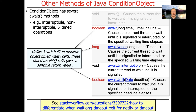Unlike Java's built-in monitor objects, which also have a timed wait call, the timed await calls give sensible return values. One of the huge deficiencies with the built-in Java monitor object methods is that the timed wait call doesn't indicate whether or not the timeout occurred, which is absolutely bizarre. The link at the bottom of the slide gives hints on how to work around this, but by far the best way is just not to use Java built-in monitor objects and instead use the Java condition objects we're talking about here.